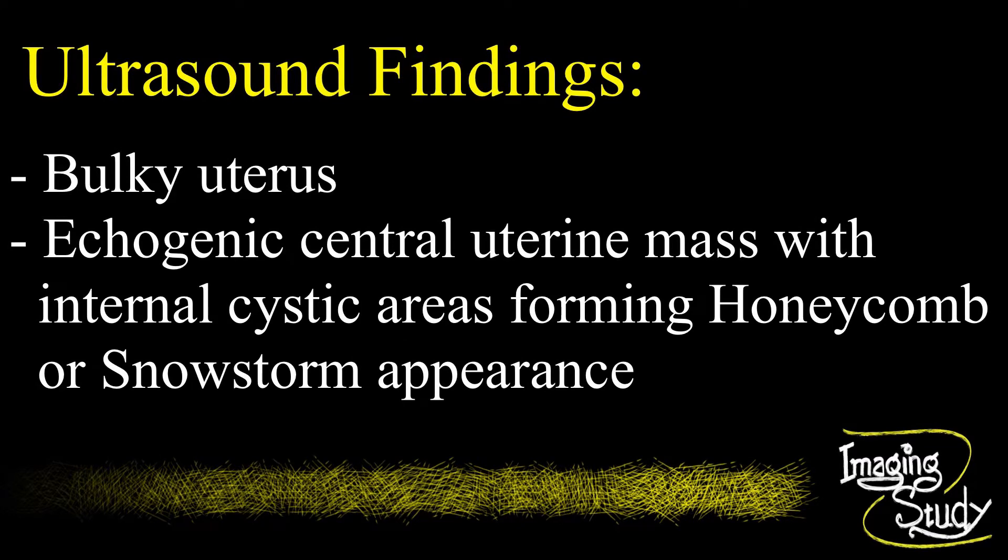On ultrasound, the uterus appears bulky. The center of the uterus shows an echogenic mass-like area with internal diffuse cystic change, forming a honeycomb or snowstorm appearance, which is typical for molar pregnancy.